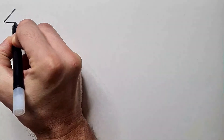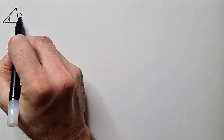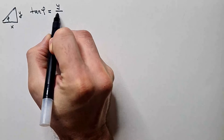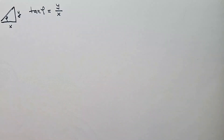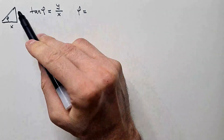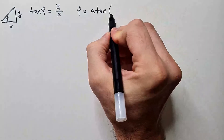We will start by defining tangent and inverse tangent, or arctangent. Let's say we have a right angle triangle with angle phi. Let's say this side is y and this side is x. The tangent of angle phi is then y over x, or opposite divided by adjacent side. The inverse function of tangent, called arctangent, will give us angle phi if we know y and x, and it will be atan of y over x.